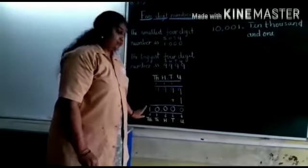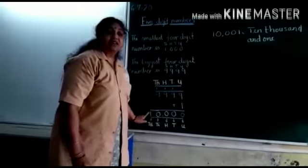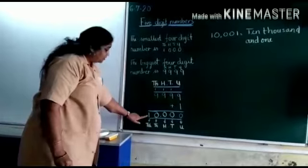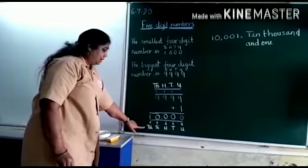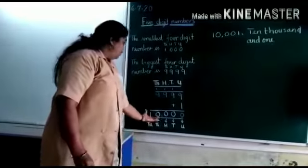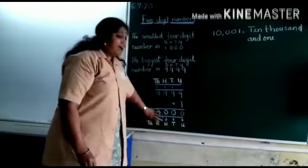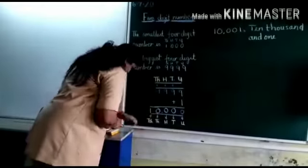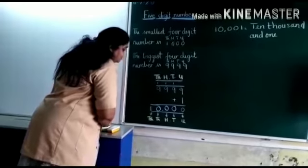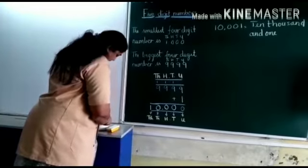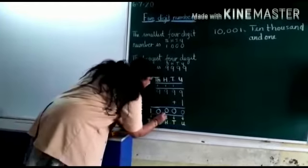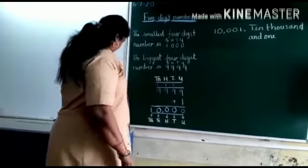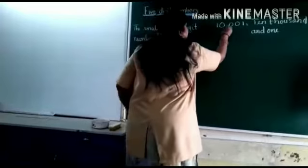Now one extra place has been added to the left hand side. The new place to our left hand side is the place of ten thousand. When we are reading a number we always take these two numbers together because they are one family — ten thousand and thousand belong to one family. So for our reading to be simple, we put a comma here. When reading any five digit number, I always put a comma after the first two numbers.